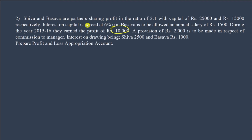Starting over with 10,000 profit. Shiva and Baswa are partners sharing profit in the ratio of 2 is to 1. They invest capital of 25,000 and 15,000 respectively. Interest on capital is agreed at 6% per annum.